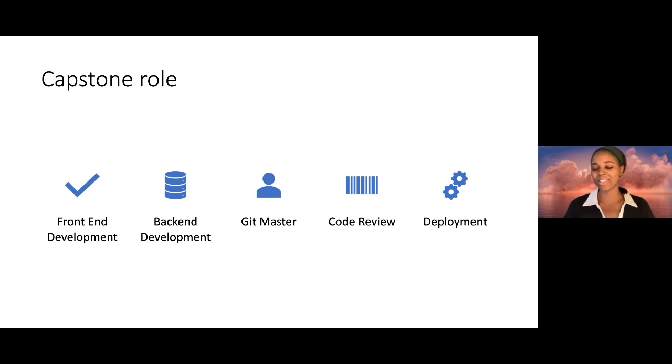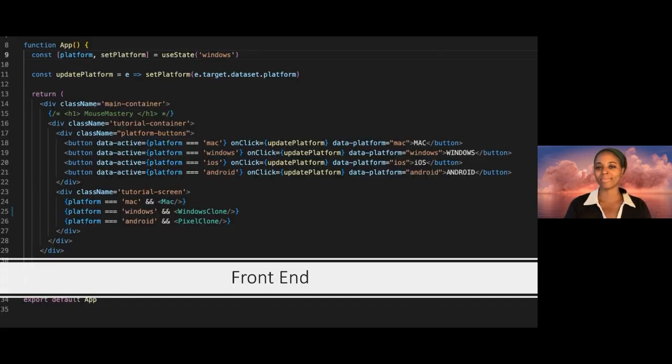For my capstone role, I was responsible for front-end development, back-end development. I was also the git master. I focused on code review and deployment. For the front end, I worked on the platform emulators, which is the forward-facing app that you see with the help of some really helpful tutorials that are listed on our readme and our GitHub. They were all created using React, and the code that you're looking at right now is our main app.js, which is basically the container that holds all the emulator components.